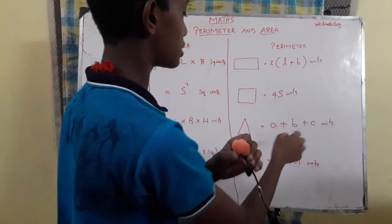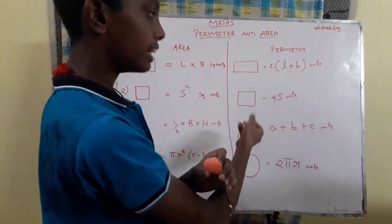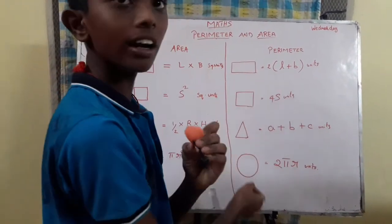Perimeter of triangle: A plus B plus C. You add all sides for perimeter of triangle.